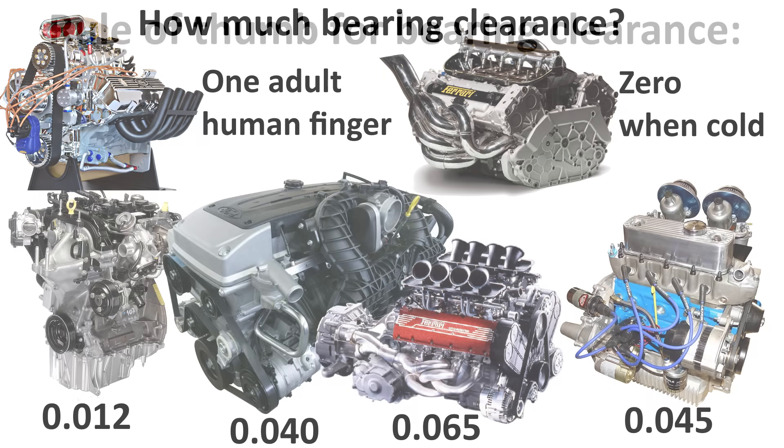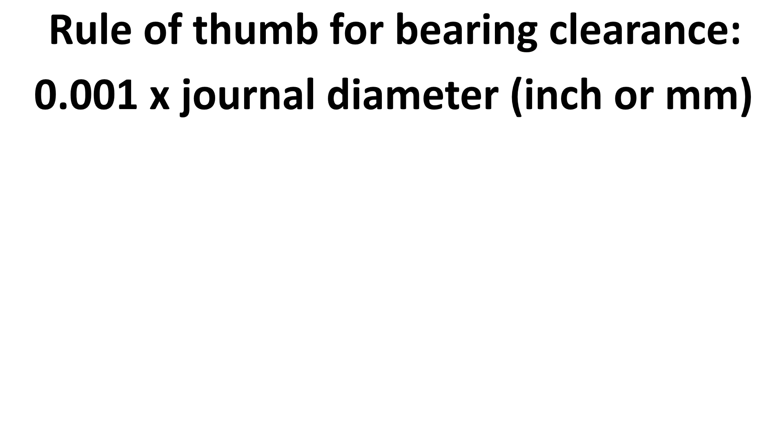However, there is a bit of a rule of thumb. It's 0.001 times your journal diameter. It doesn't matter if it's inches or millimeters.